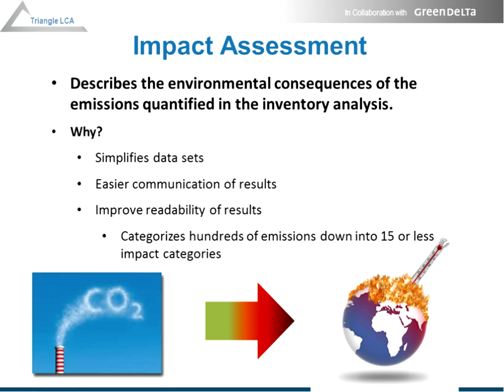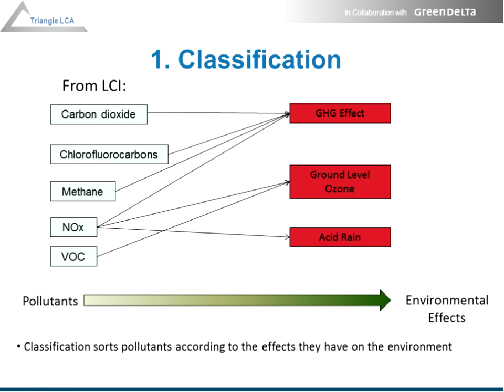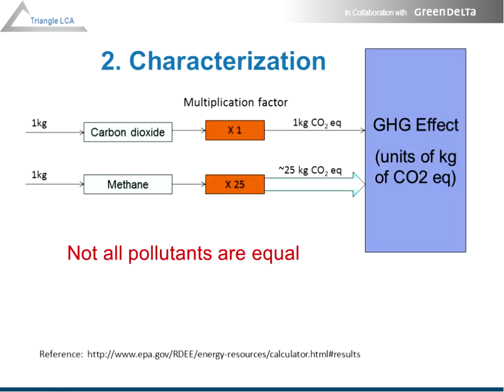Once we have the chemicals and emissions, we can calculate how different materials impact the environment. Within the life cycle inventory you might have hundreds of material flows and different chemicals; impact assessment can reduce these down to maybe five to ten different numbers indicating how a product or system impacts the environment, helping people understand the data. One of the first steps is classification — matching the emission with the type of environmental impact. Some pollutants or emissions can affect more than one category.